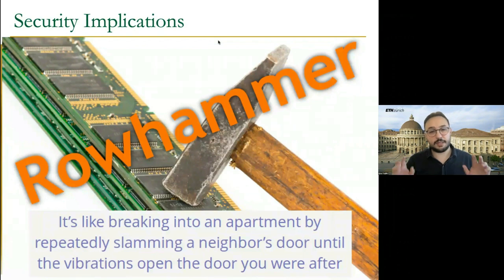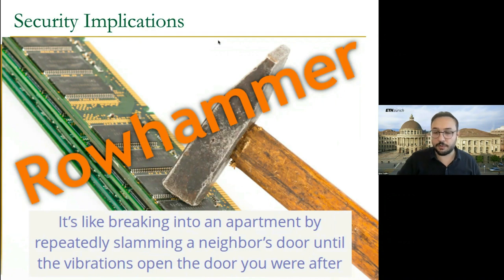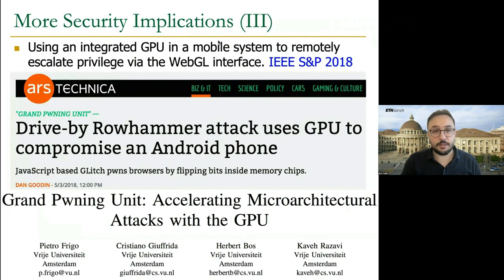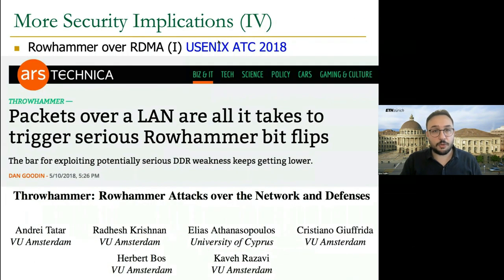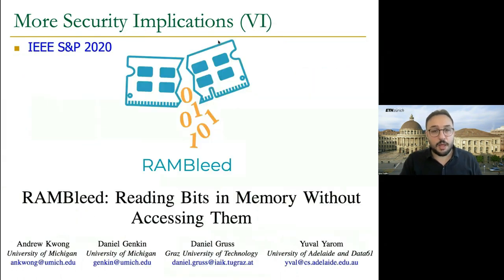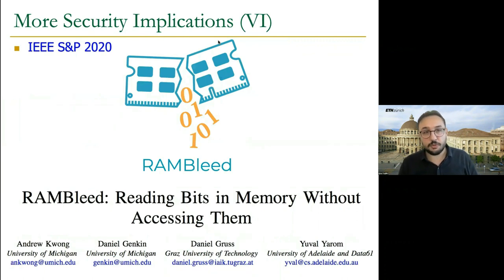The vulnerability is identified on the web as being like breaking into an apartment by repeatedly slamming a neighbor's door until the vibrations open the door you want. After the discovery of RowHammer, many system-level attacks were proposed — using JavaScript code, on mobile devices, using GPUs, using RDMA requests or network packets for inducing RowHammer bit-flips, and so on. RowHammer was used for taking over the system by Google Project Zero in 2015.